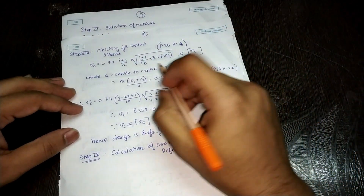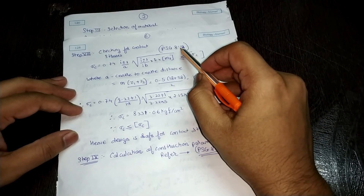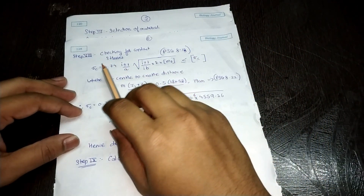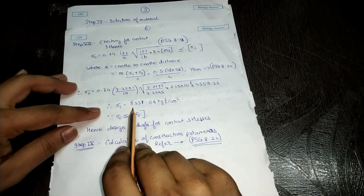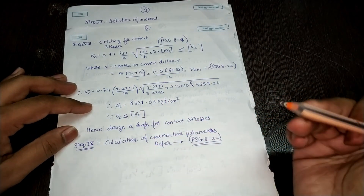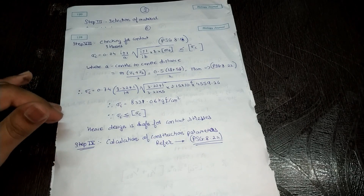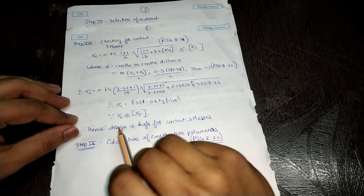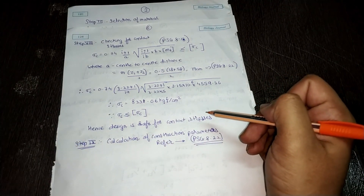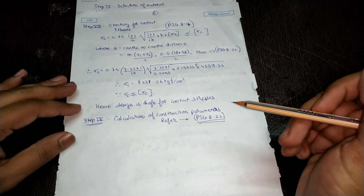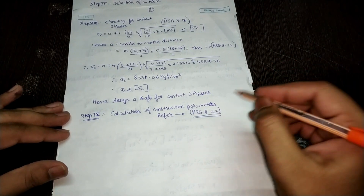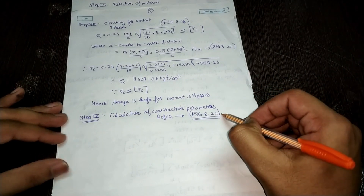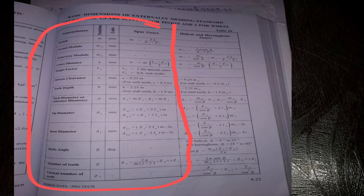The next step is checking for contact stresses using PHC 8.13. Substituting the values into the formula, σC = 8331.06 kgf/cm², which is less than the design contact stress, so the design is safe in contact stresses. Our last step is to calculate the construction parameters for the gear and pinion, with all formulas given in PHC 8.22. Thus we have successfully completed the design procedure for the spur gear.